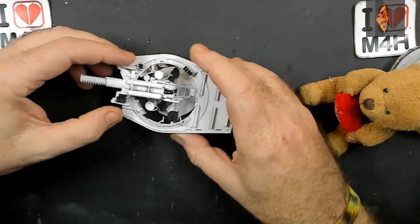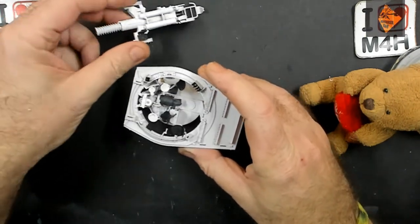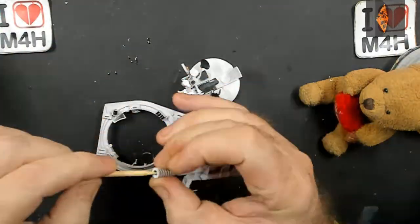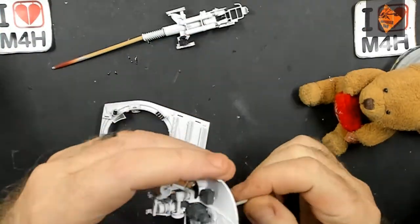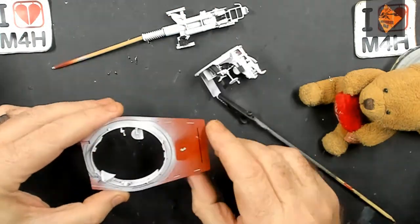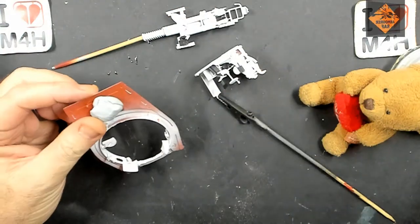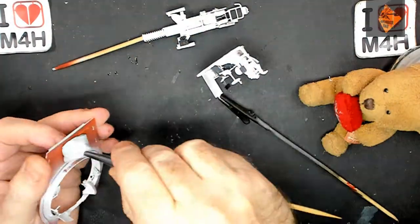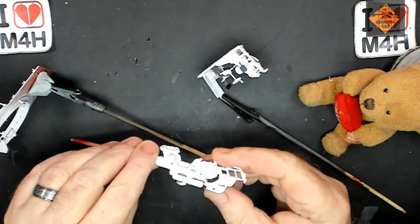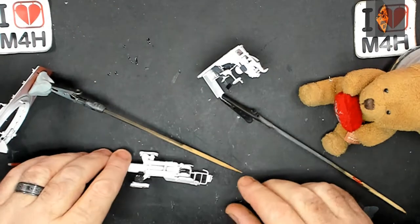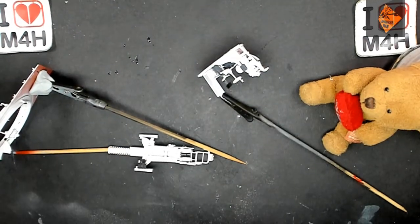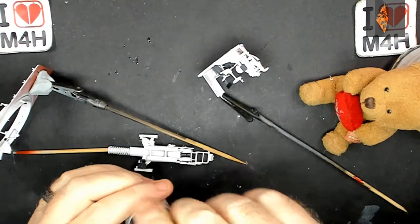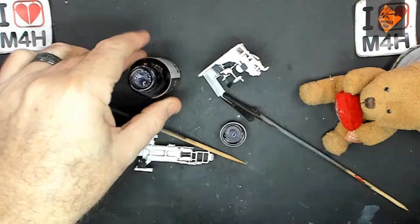Next I prepped all the white parts for a coat of Alclad's gloss varnish. With the parts all prepped, I realized I needed to give the breech block a quick coat of gun metal. So I got out Alclad's gun metal and gave that a go. I also did the machine guns as well with it.